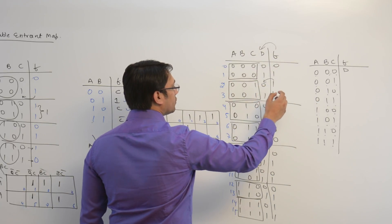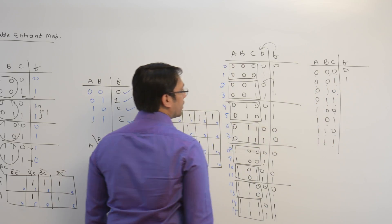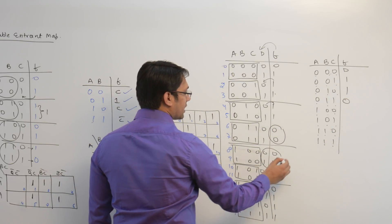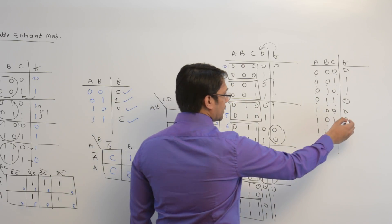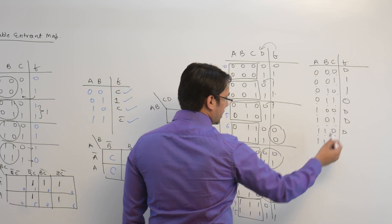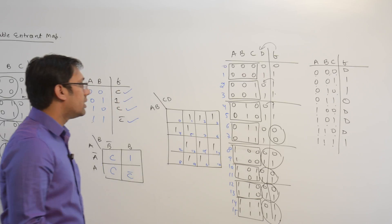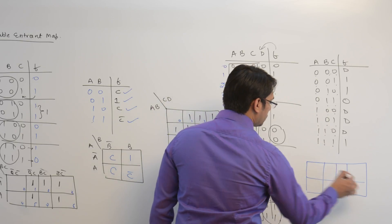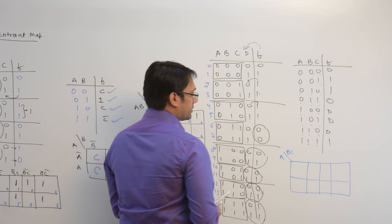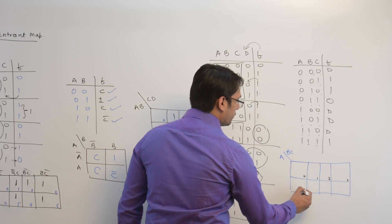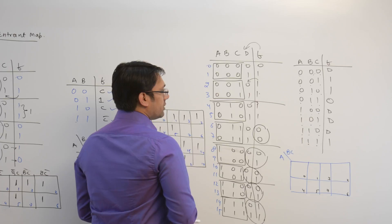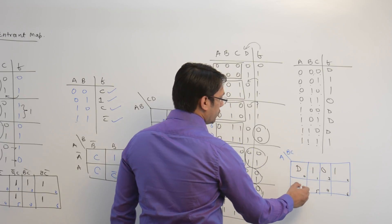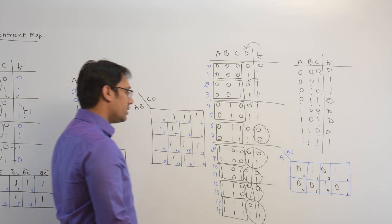When the combination is 0-0-1, F gives only 1 regardless of D, so we write 1. When the combination is 0-1-0, F gives only 1. When 0-1-1, F gives only 0. The combinations 1-0-0, 1-0-1, and 1-1-0 all give exactly the value of D, so we write D. And 1-1-1 gives 1. This gives us a three-variable Variable Entrant K-map.